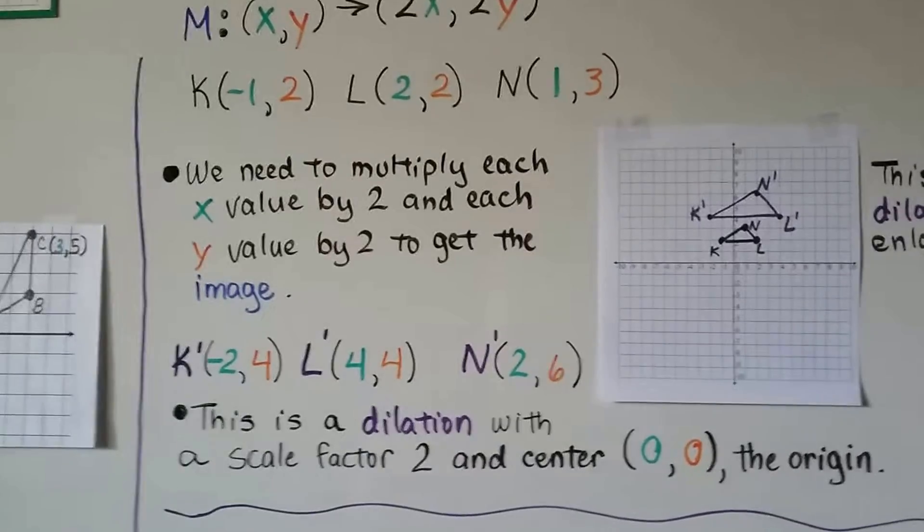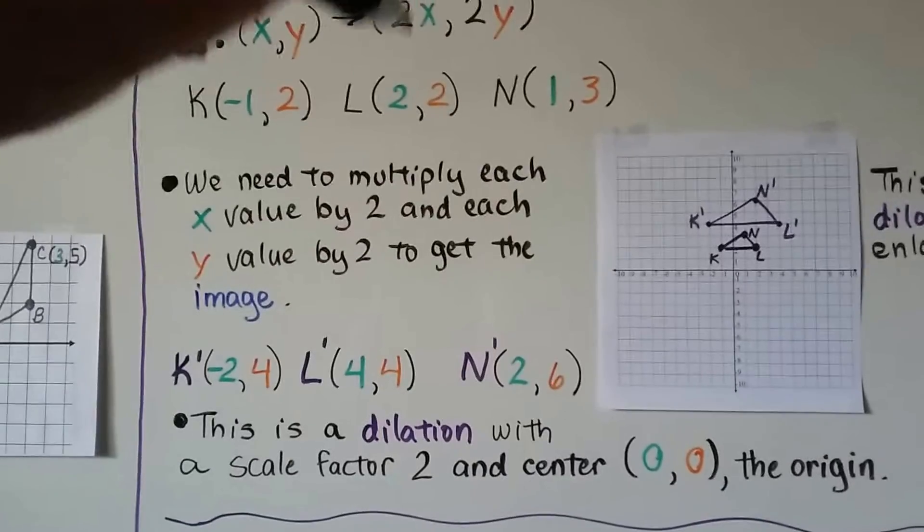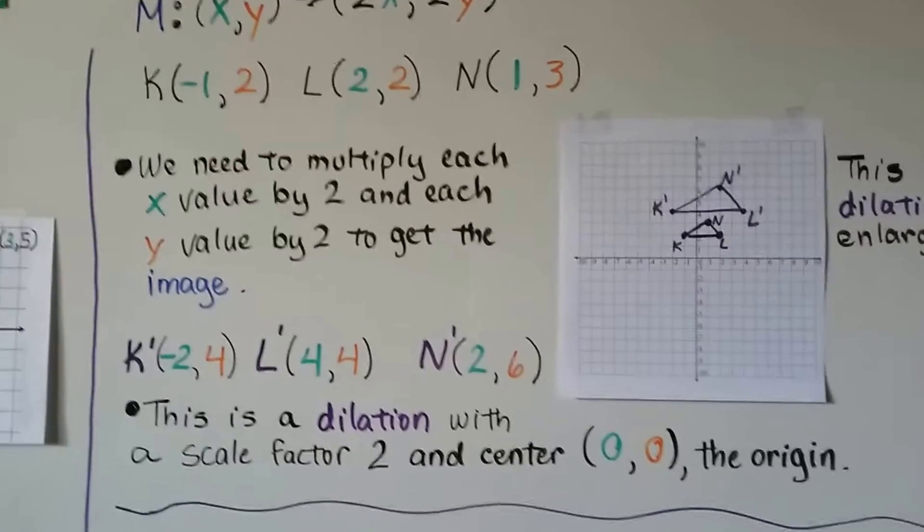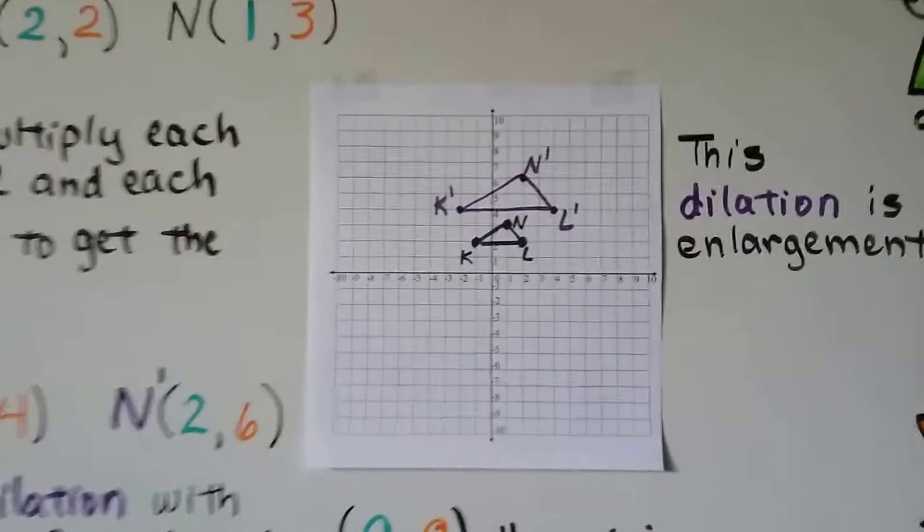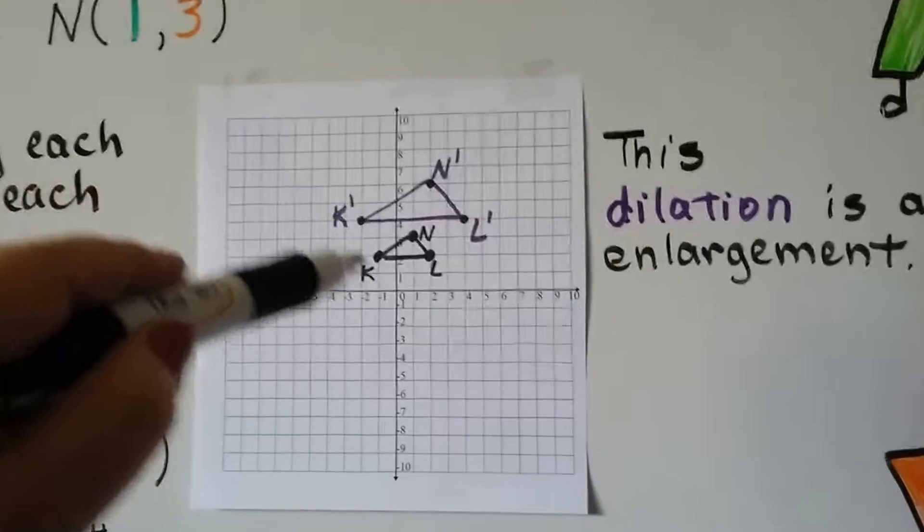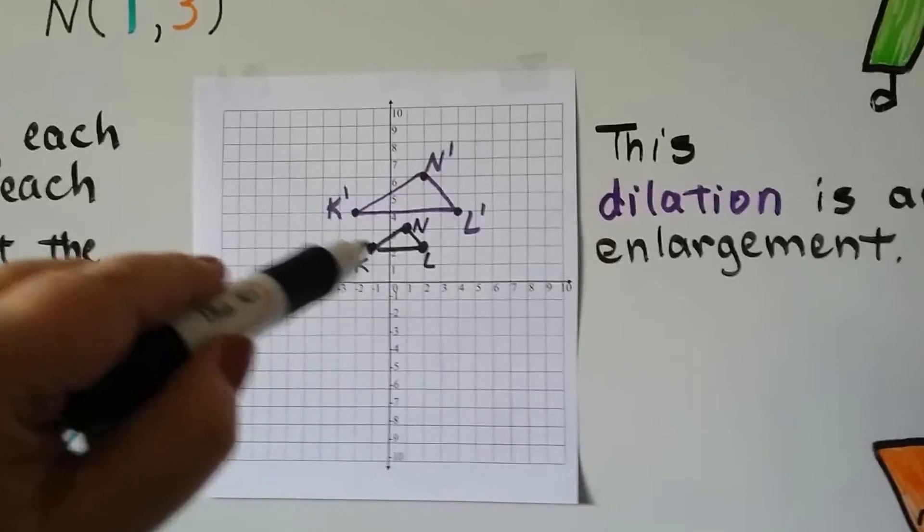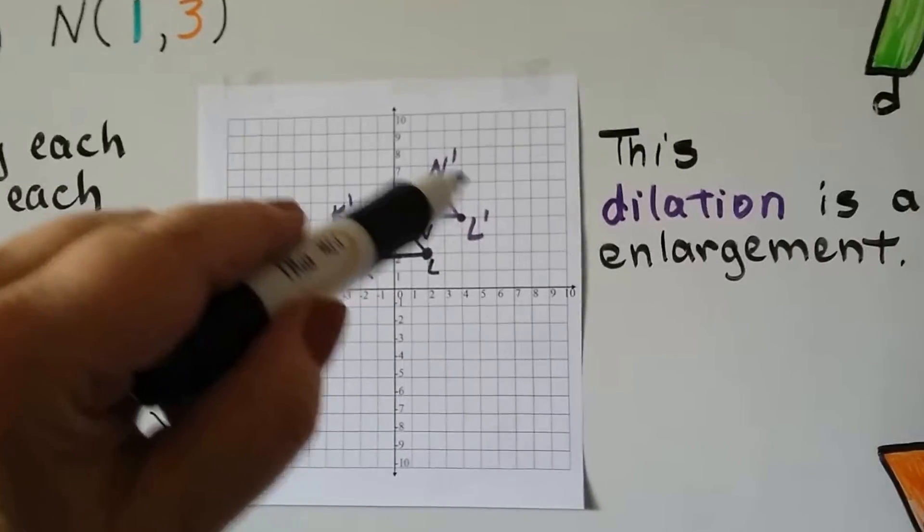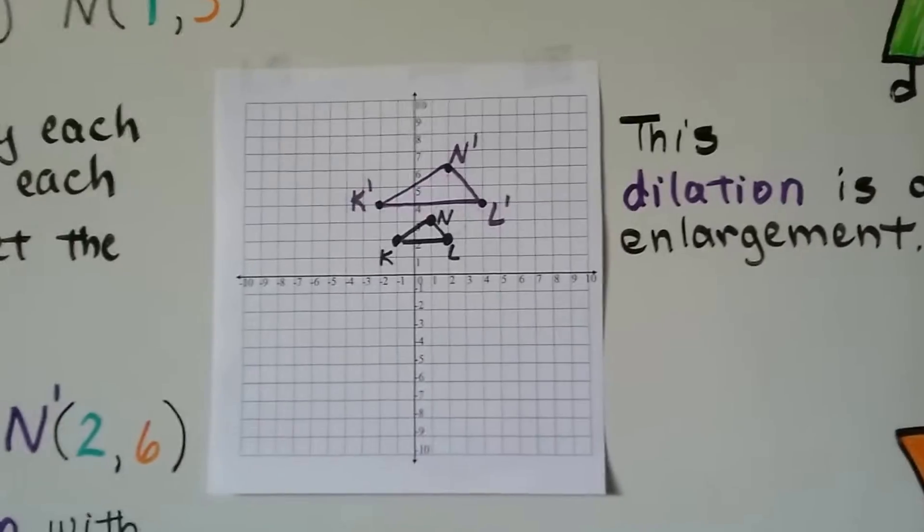So this is a dilation with a scale factor of 2, and center (0, 0), the origin. So this dilation is an enlargement. Because we multiplied each by 2, it grew. So now this little triangle became K prime, L prime, N prime, this larger triangle.